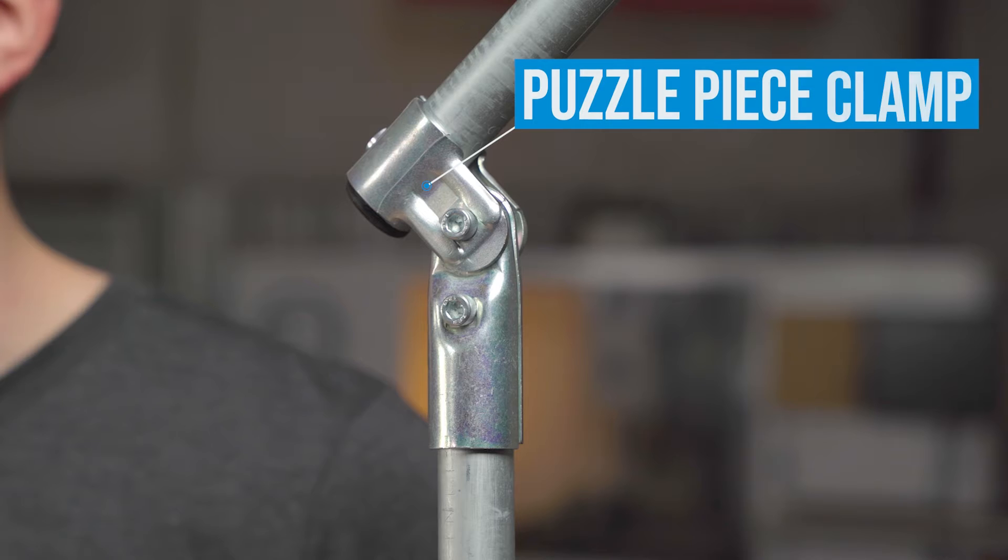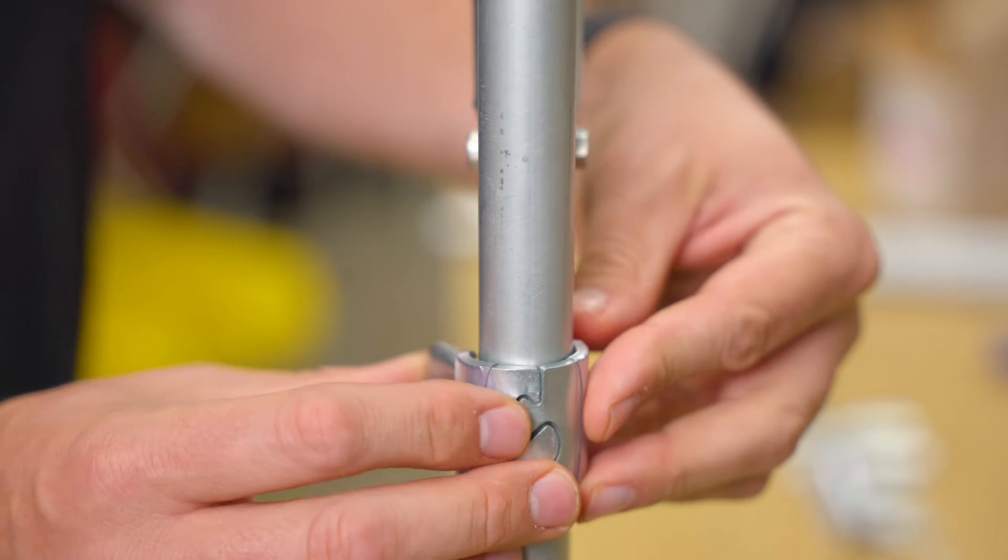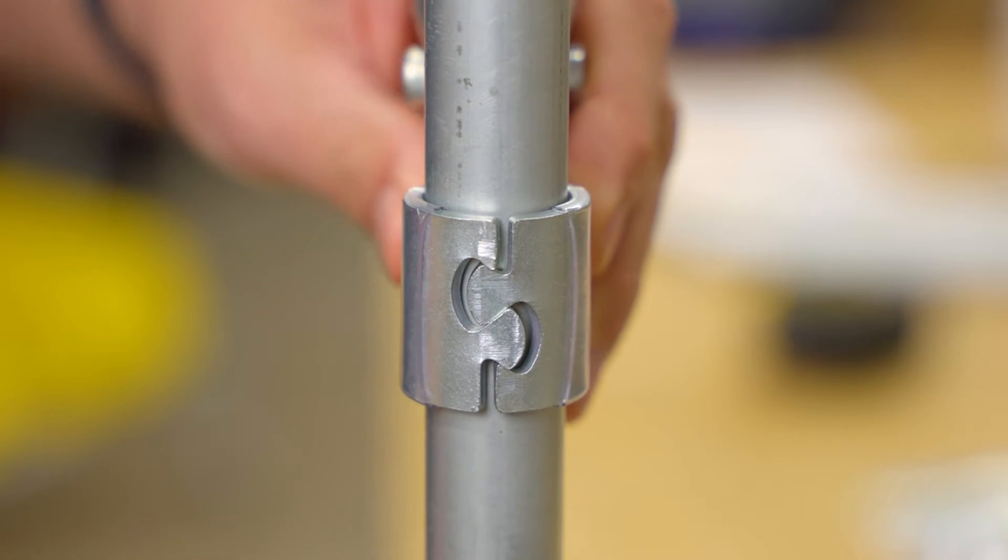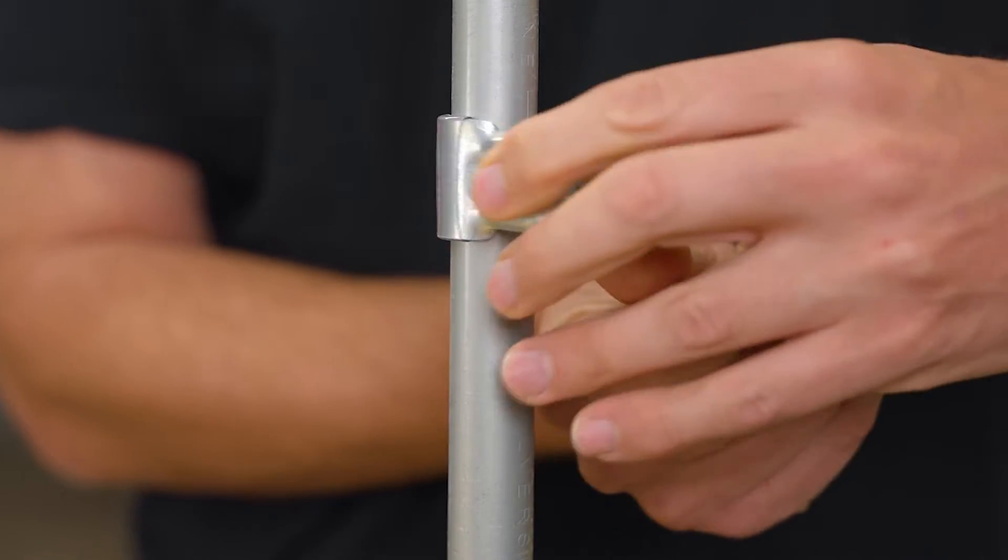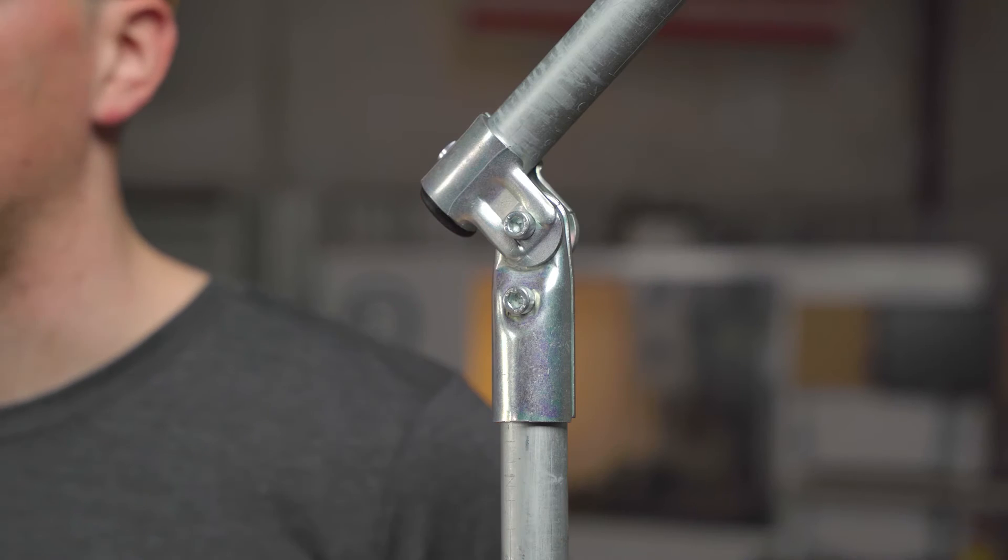We call the top half of the adjustable angle connector the puzzle piece clamp because two mirrored tabs interlock together to create it. This clamp allows for a through pipe connection which simply means you can clamp around a piece of conduit virtually anywhere in your project, even flush with the end.